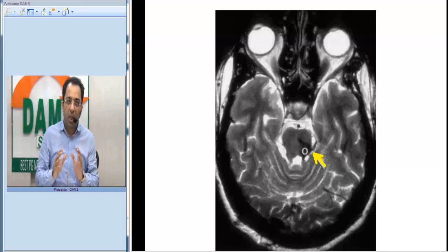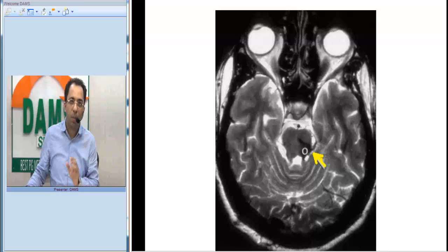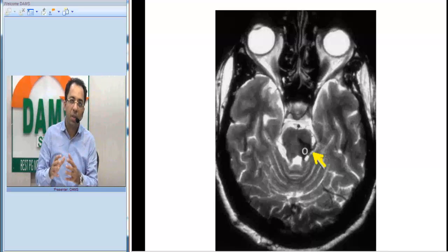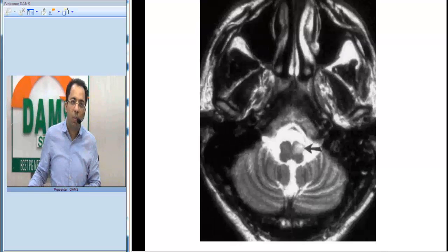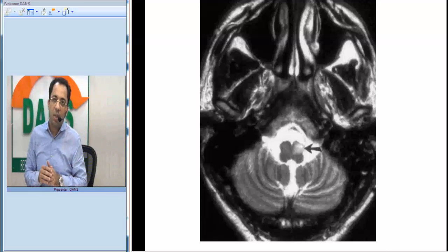The key message is: if you see something which is dark on both T1 and T2 weighted images, this could be chronic hemorrhage or hemosiderin. This can be further confirmed on a gradient echo or susceptibility weighted image. On this image we take a provisional idea that this could be hemosiderin staining in this area. Now, in the same patient, if you look at a T2 weighted image at a lower section...